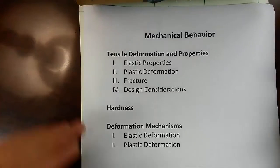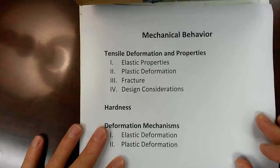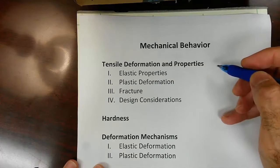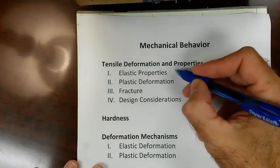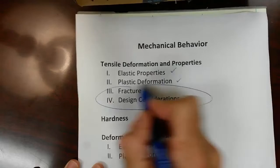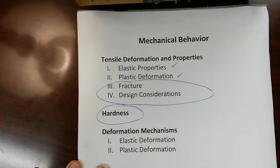Hi, Dr. Lyons here. In this class, we've been discussing the mechanical behavior of materials. The particular section of the chapter we're on deals with tensile deformation and properties. Last time, we discussed elastic properties and plastic deformation. In this video, I'll talk about fracture and design considerations, and also the next section of this chapter, dealing with hardness.